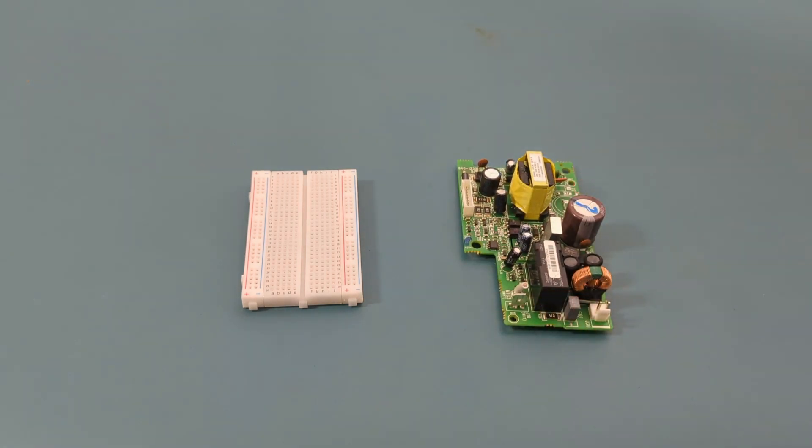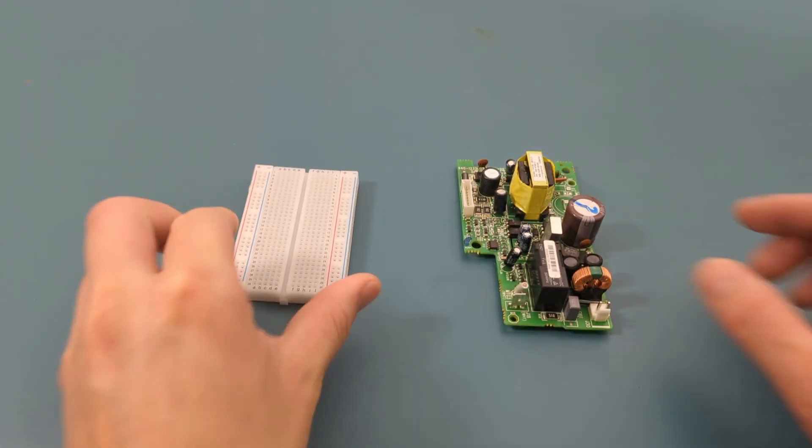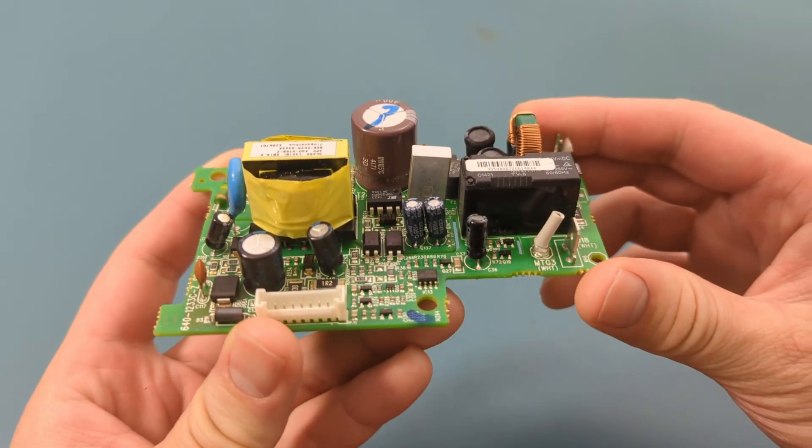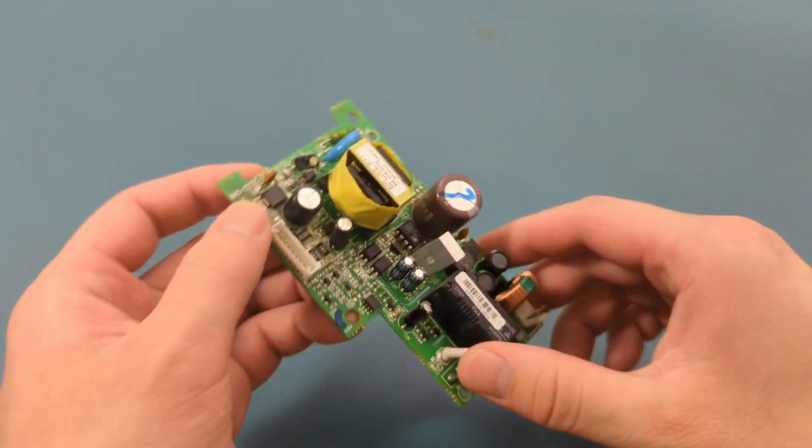Here I have a breadboard and a PCB or printed circuit board. A breadboard is used for testing circuits. It's great for quickly building and changing circuits without soldering during the design phase. A PCB is a permanent way to build final circuits. It requires soldering components onto a board with specific paths for a durable, stable connection.